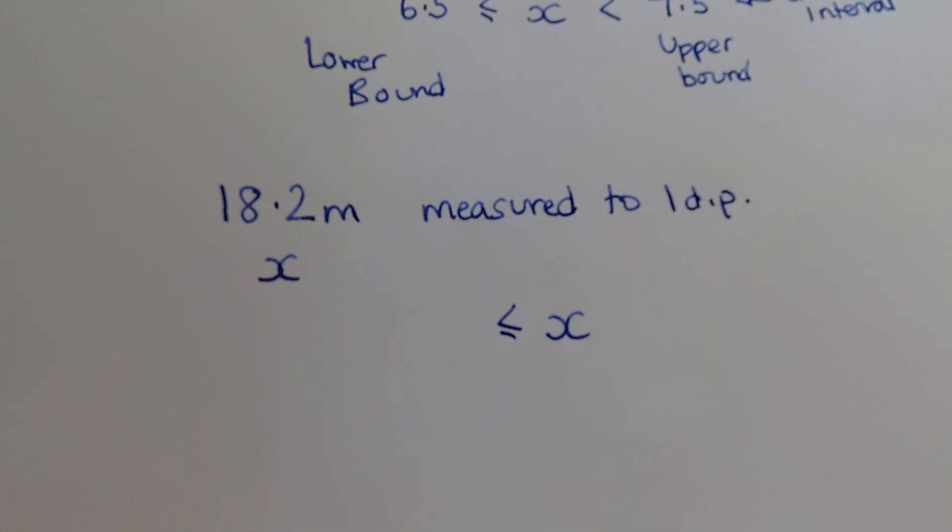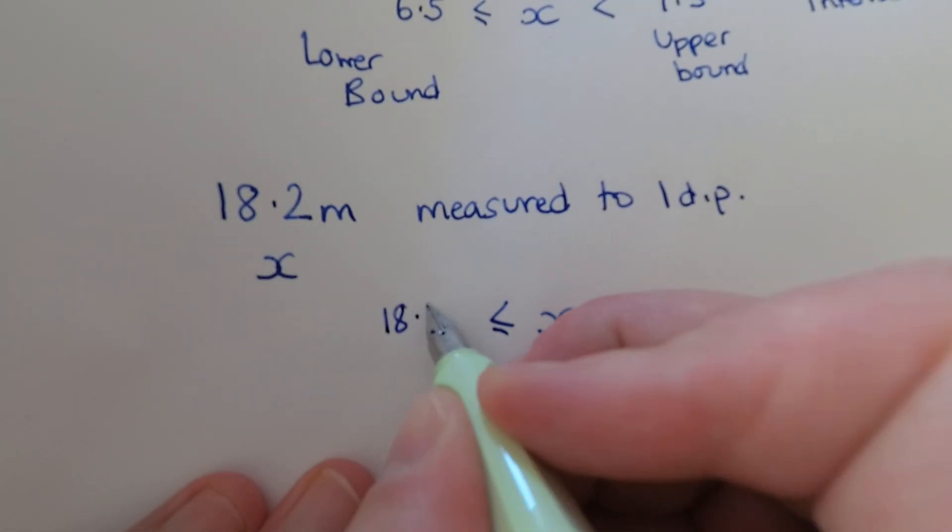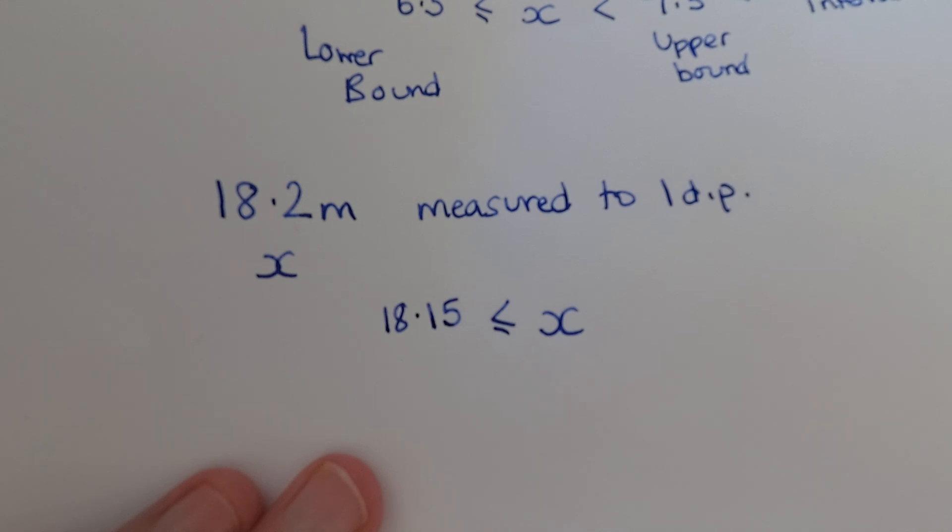Well, 18.1 wouldn't because that's already rounded to one decimal place, that's going to be too small. 18.19 for example would round up to 18.2, so that must be in the range somewhere. But the smallest amount that would round up to 18.2 would be 18.15. Remember this one will always have a five involved because that's halfway through the numbers. 18.15 rounded to one decimal place would become 18.2, anything smaller than that would round down to 18.1.